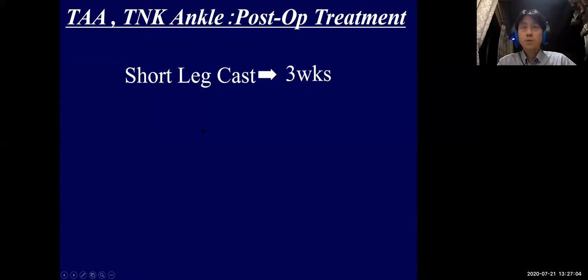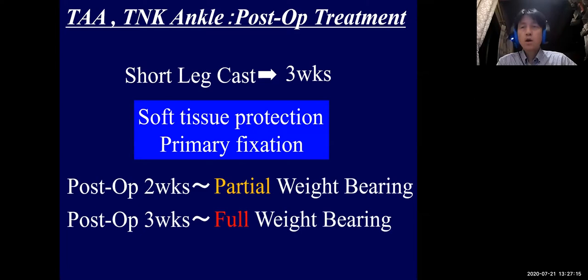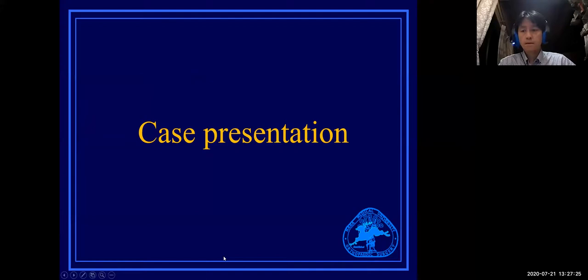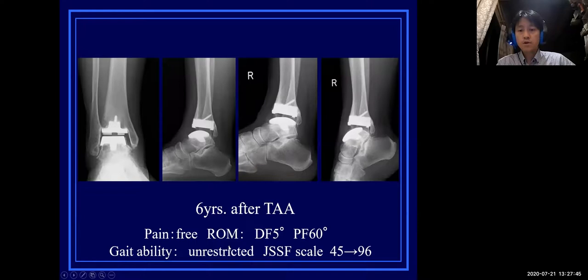A short leg cast is applied for three weeks for soft tissue protection and primary fixation. Partial weight bearing is permitted two weeks after surgery, and full weight bearing is started after three weeks. Case presentation: this is a stage 4 ankle arthritis case with TAS of 77 and TAM of 39. Six years after surgery, she is free from pain, maintains favorable range of motion, with no evidence of loosening or subsidence. JSSF scale improved from 45 to 96.